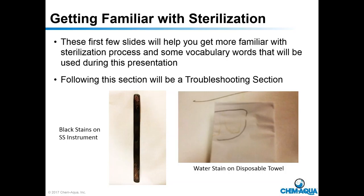I'm going to look at some vocabulary words to help you get familiar so that when you hear these things in a conversation with a central sterile nurse or a surgical nurse, it will make sense to you — and they'll also know that you know what you're talking about. Here are just a couple of examples: an instrument coated in a black, darkish stain, and on the right-hand side, water stains on disposable towels.